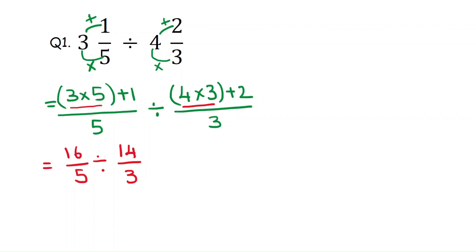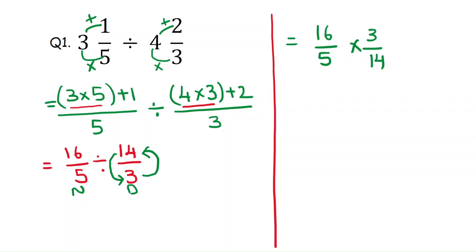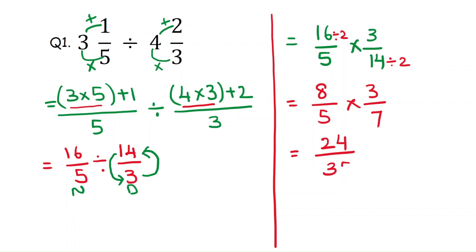Here, 16 over 5 is the numerator and 14 over 3 is the denominator. When the denominator is a fraction, you have to take its reciprocal. That means 16 over 5 times the reciprocal of 14 over 3, which is 3 over 14. So 16 is divisible by 2 and 14 is divisible by 2, giving 8 over 5 times 3 over 7. That is 24 over 35 as the answer.